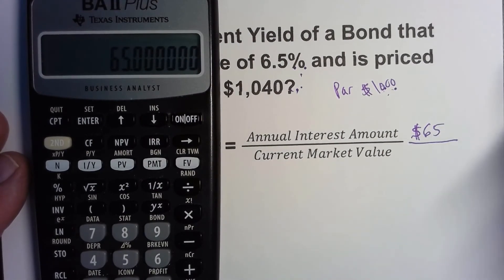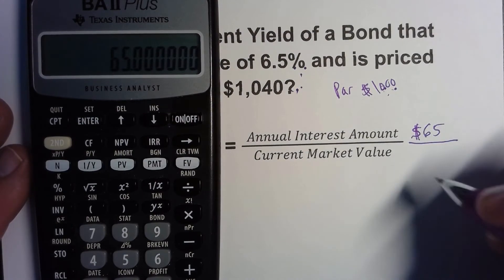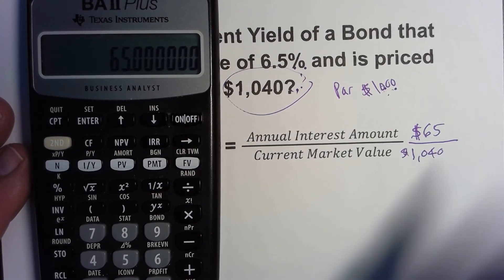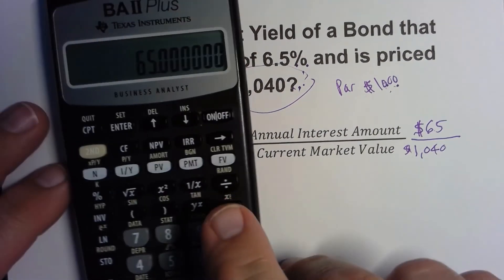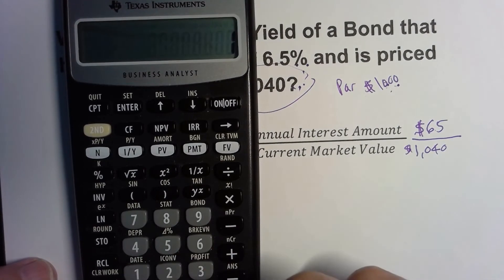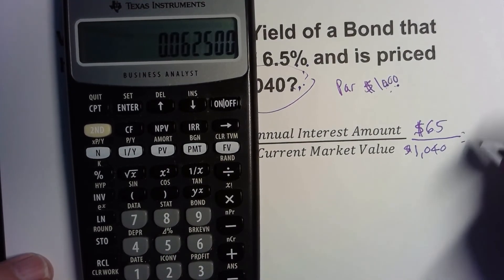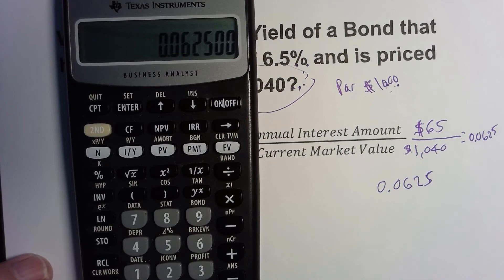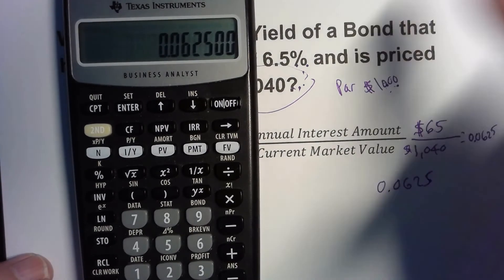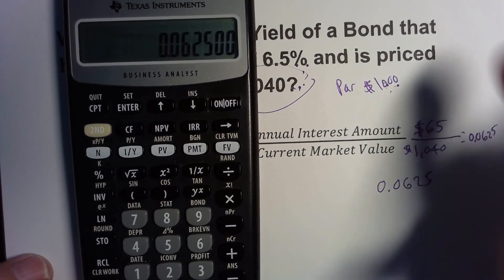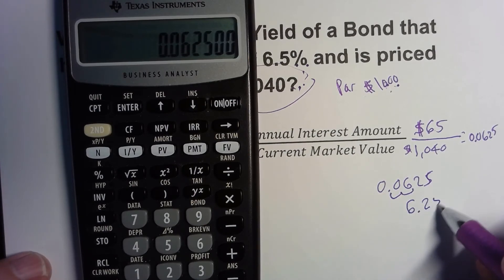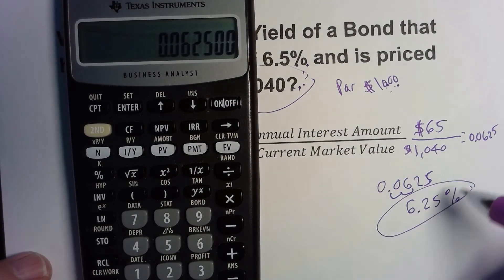So every year we're going to receive $65 from holding this bond. The current market value is $1,040. We divide $65 by $1,040, which gives us 0.0625. Converting that decimal to a percentage — moving the decimal two places — gives us 6.25%, which is less than the 6.5% coupon rate, exactly as we predicted.